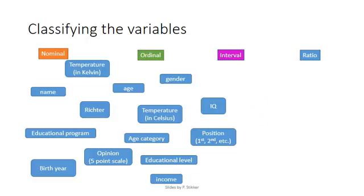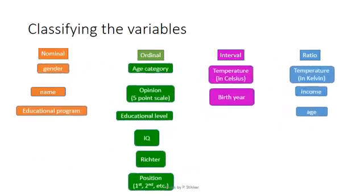We can now classify all of the variables that we've been discussing accordingly. So all the different colors match with all of the different types. And here's the full overview of how to categorize each of the different variables that we've discussed.